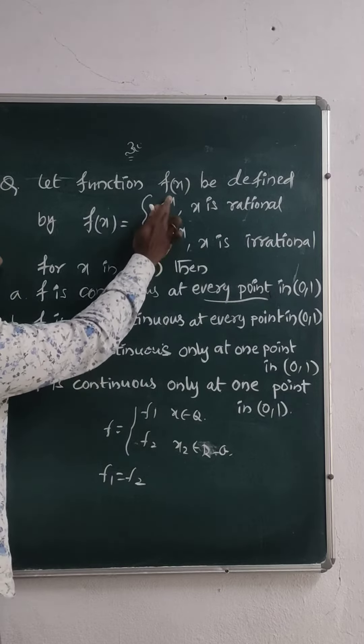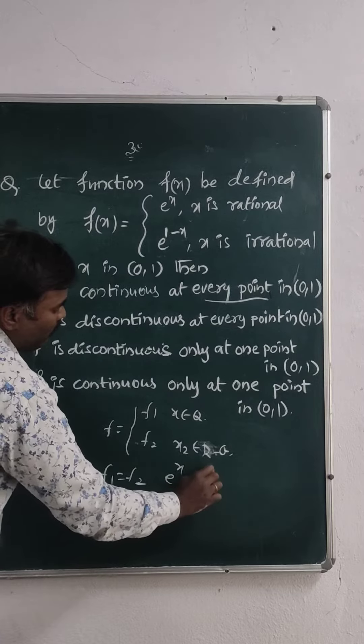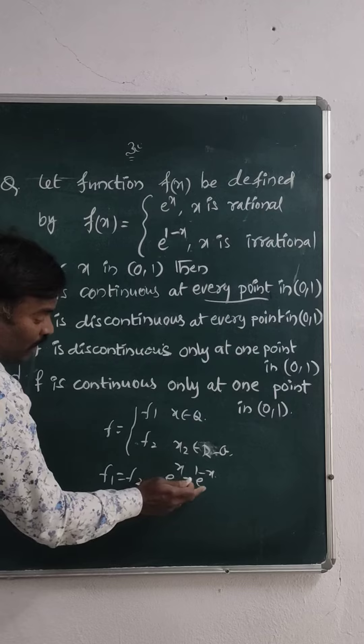So, f1 equals f2 means e to the power of x equals e to the power of 1 minus x. So here, both the powers are equal when the bases are equal.